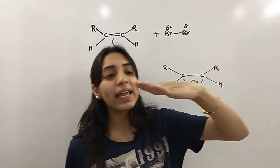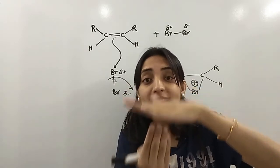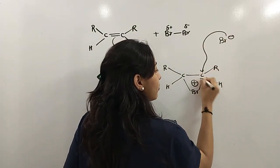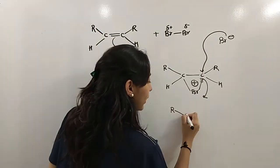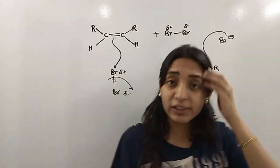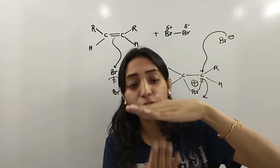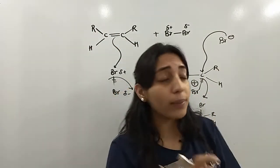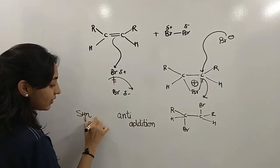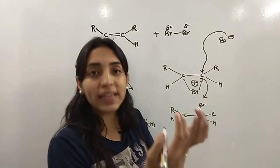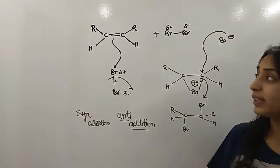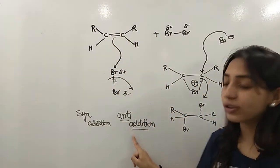An intermediate will be formed — RCH–CRH with Br in the center and a positive charge. Now remember, this was the alkene in the plane of the paper. One Br has attacked from the bottom. So the second Br, to avoid steric repulsion, will come from the top. That means one Br attacks from the bottom and one Br attacks from the top. This is a planar molecule — one atom or group coming from the bottom and the other from the top. We call this anti-addition. Syn addition means attack from the same side; anti-addition means one from the bottom and one from the top.